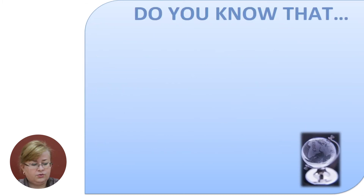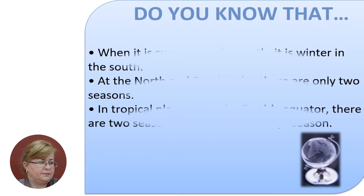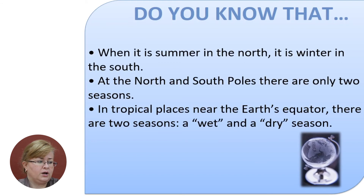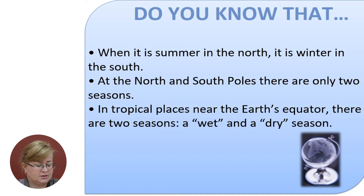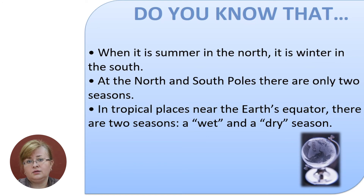Do you know that when it is summer in the north, it is winter in the south? At the north and south poles, there are only two seasons. In tropical places near the earth's equator, there are two seasons: a wet and a dry season.